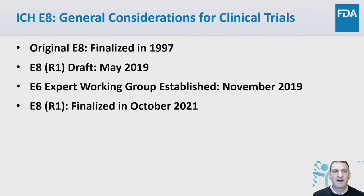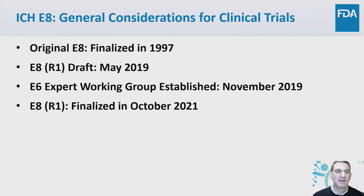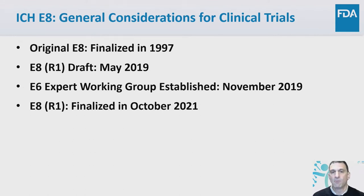Here's a brief timeline. The E8 original was finalized in 1997. A draft of the renovation was released in 2019. In November 2019, the E6 expert working group was established to do the renovation of E6. E8 renovation R1 was finalized in October 2021 and is currently being adopted by the member parties. The US FDA has adopted E8 R1, so it's now official US FDA guidance.